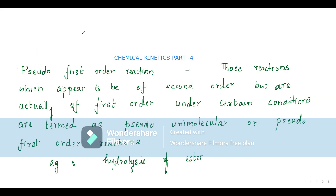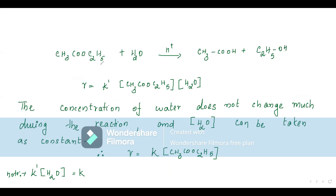It will be clear if we take an example. The classic example for a pseudo first order reaction is hydrolysis of an ester. Here I have taken ethyl ethanoate, which is subjected to hydrolysis — that is, treating ethyl ethanoate with plenty of water. This reaction takes place in acid medium and the products are ethanoic acid and ethanol.